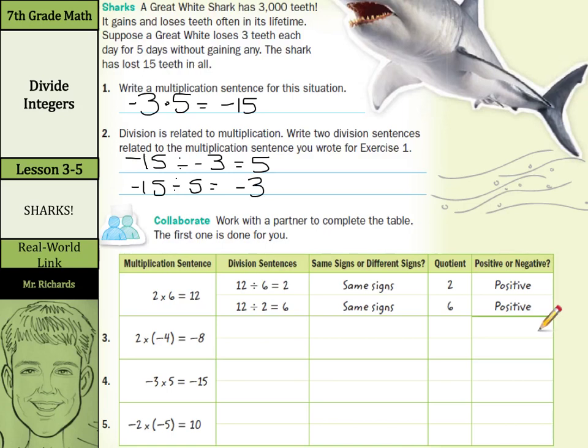Now, work with a partner to complete the table. You may not have a partner with you, so you can just follow along. The first one's done for us, where 2 times 6 was 12, and so 12 divided by 6 is 2, and 12 divided by 2 is 6. And so we had the same signs here. Our quotients were 2 and 6, and both were positive.